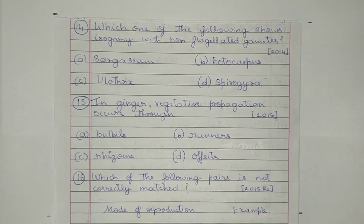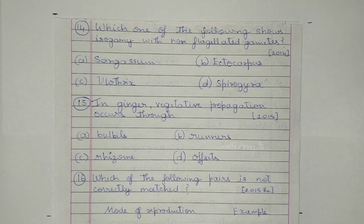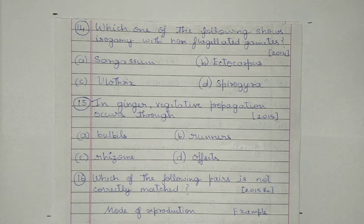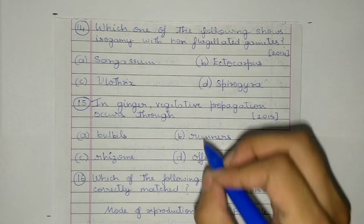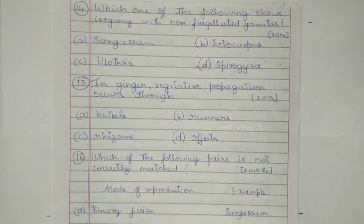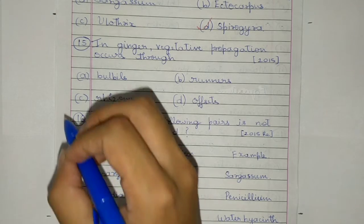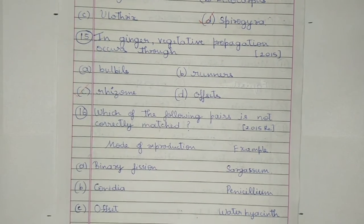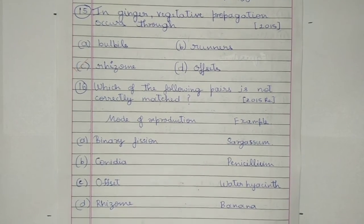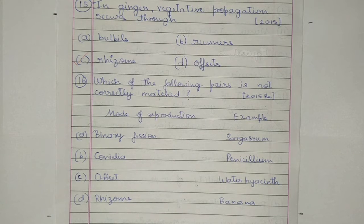Question 14. Which one of the following shows isogamy with non-flagellated gametes? a) Sargassum, b) Ectocarpus, c) Ulothrix, or d) Spirogyra. The answer is d) Spirogyra. Question 15. In ginger, vegetative propagation occurs through: a) bulbils, b) runners, c) rhizome, or d) offsets. The answer is c) rhizome.